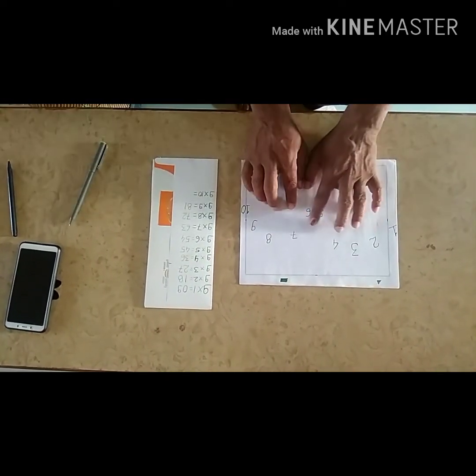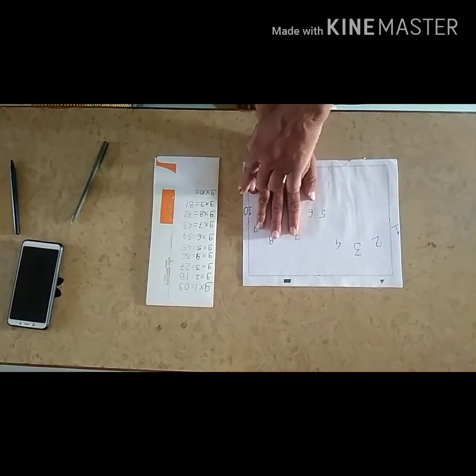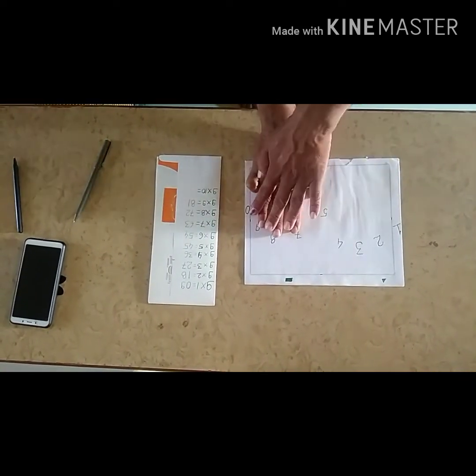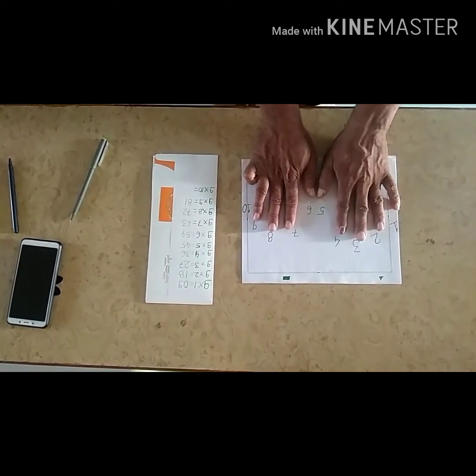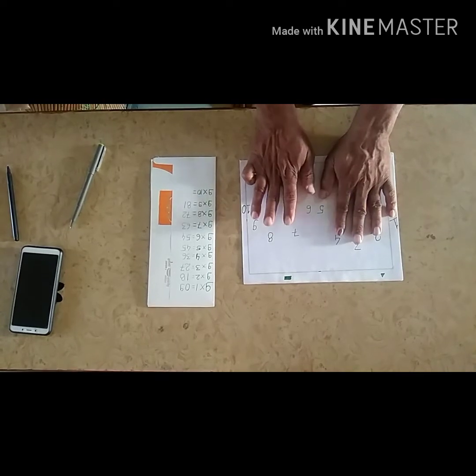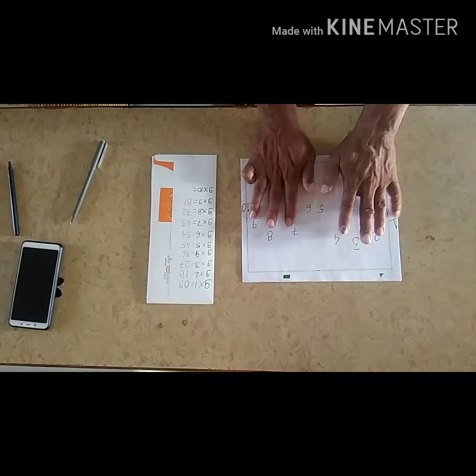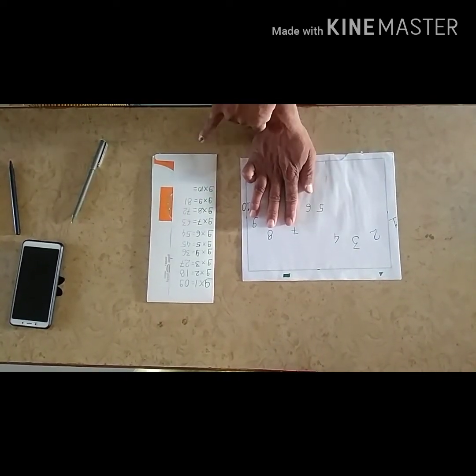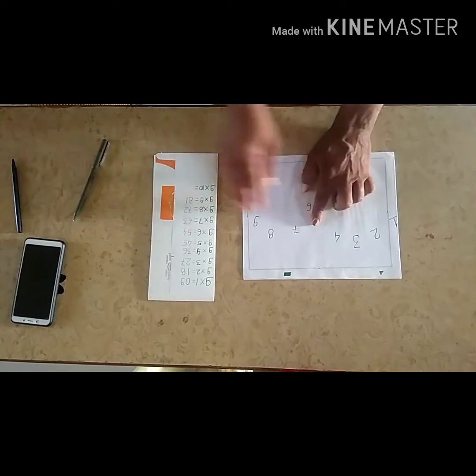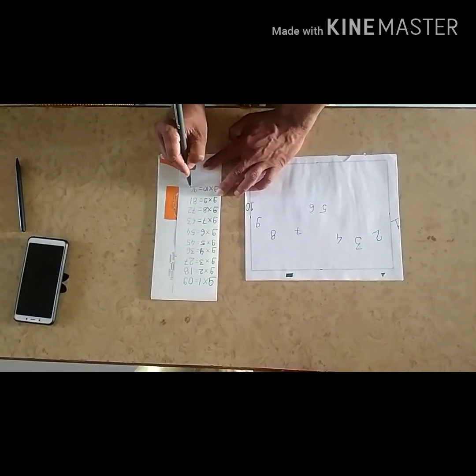For 9 into 10, we will fold the 10th finger. All the fingers are on the left now. So 9 on the left: 1, 2, 3, 4, 5, 6, 7, 8, 9. 9 on the left, nothing on the right. So 9, 0. 9 into 10 is equal to 90.